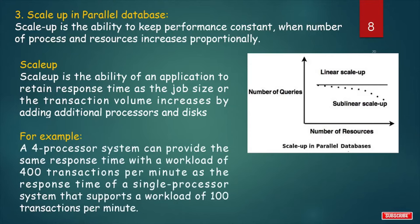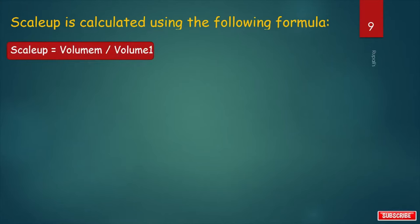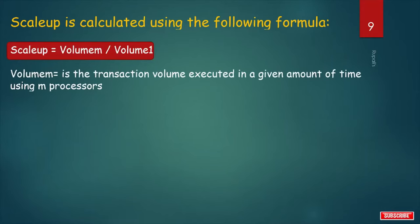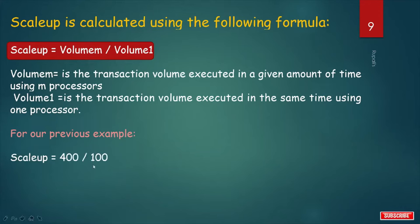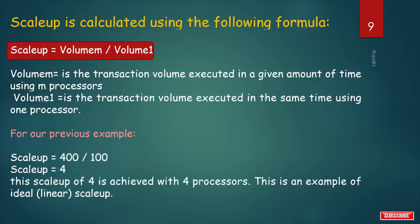Example: a single-processor system supports a workload of 100 transactions per minute, and a four-processor system supports 400 transactions per minute — response times are the same for both cases. The formula for scaleup is: Scaleup = Volume_n / Volume_1, where Volume_n is the transaction volume executed in a given time using m processors, and Volume_1 is the transaction volume executed in the same time using one processor. Scaleup = 400 / 100 = 4, achieved with 4 processors. This is an example of ideal linear scaleup.